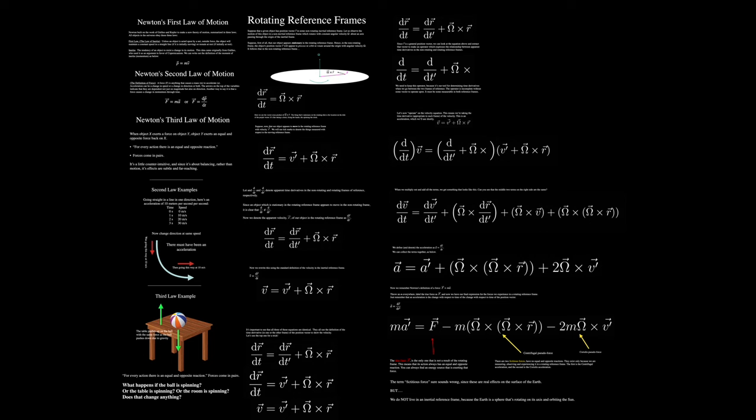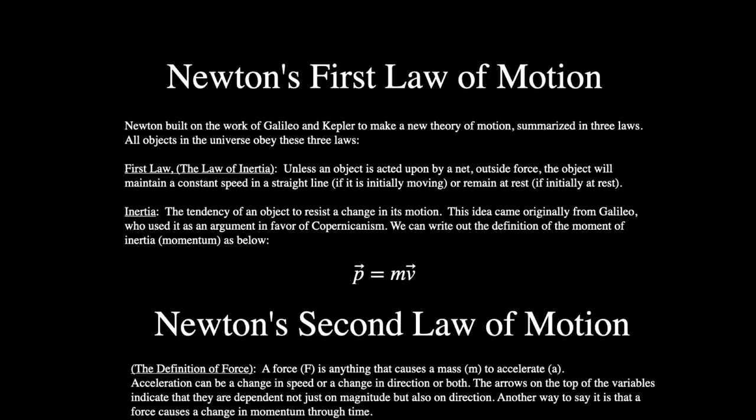There's a lot of things that we get from rotating reference frames, including the reason that hurricanes rotate the way they do, the Coriolis effect that happens on Earth, as well as centripetal forces and centrifugal forces — one of those is real and one of those is not. We'll cover real forces and fictitious forces, and what we mean by an inertial reference frame. To get rotating reference frames, we have to do a review of Newton's laws, so let's start off with Newton's first law.